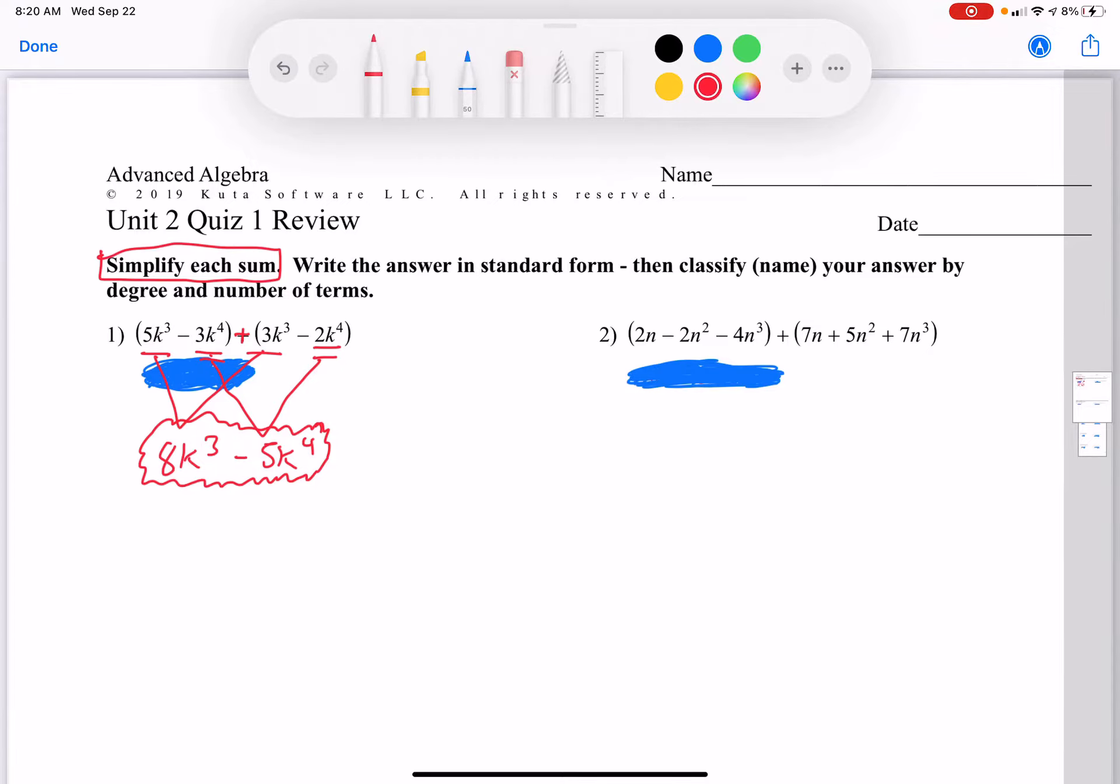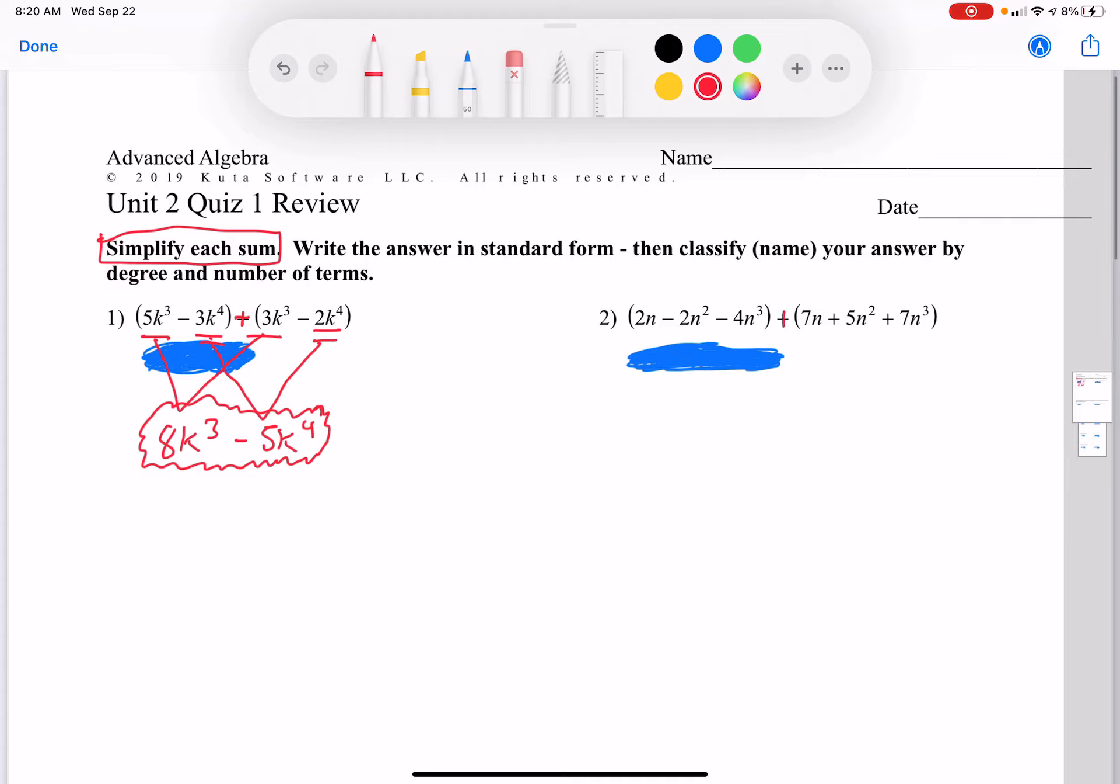Next, let's look at number 2. Again, we're just adding like terms. So 2n plus 7n is 9n, not 9n squared, it's just 9n.